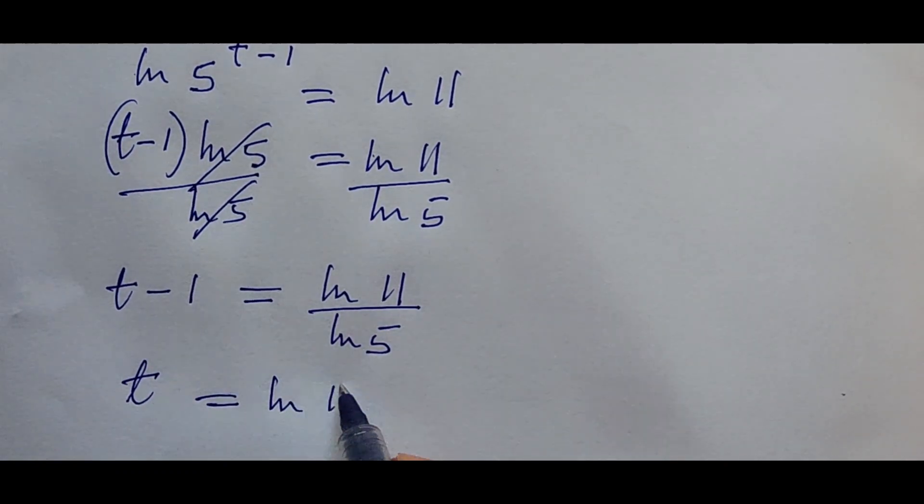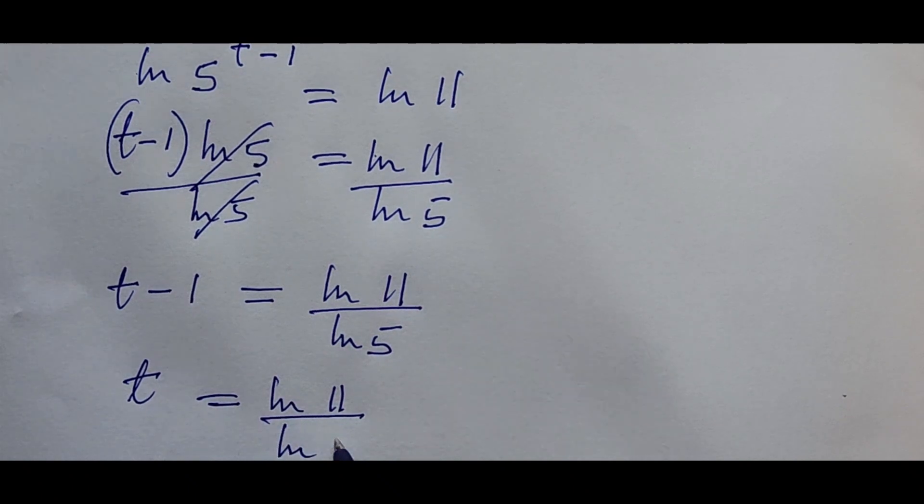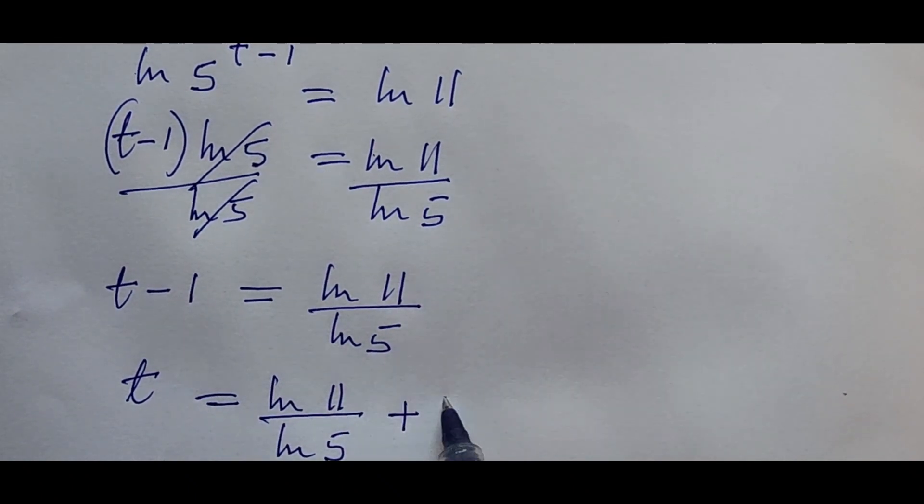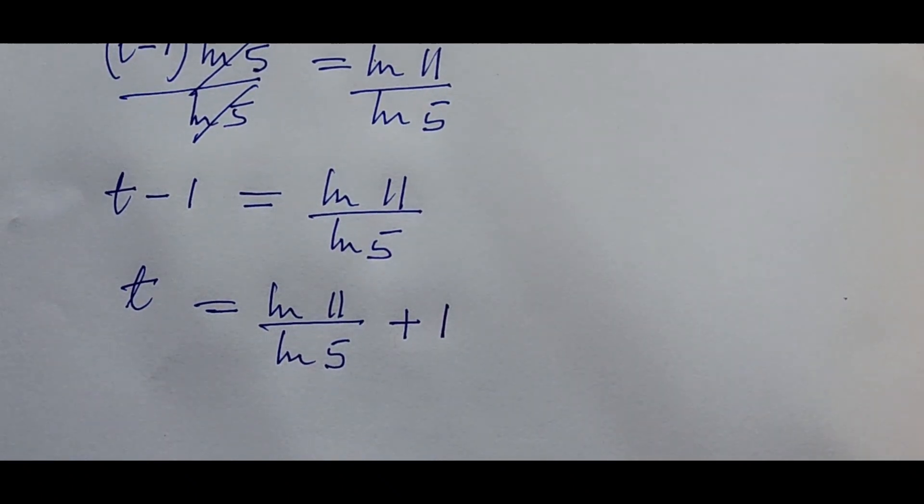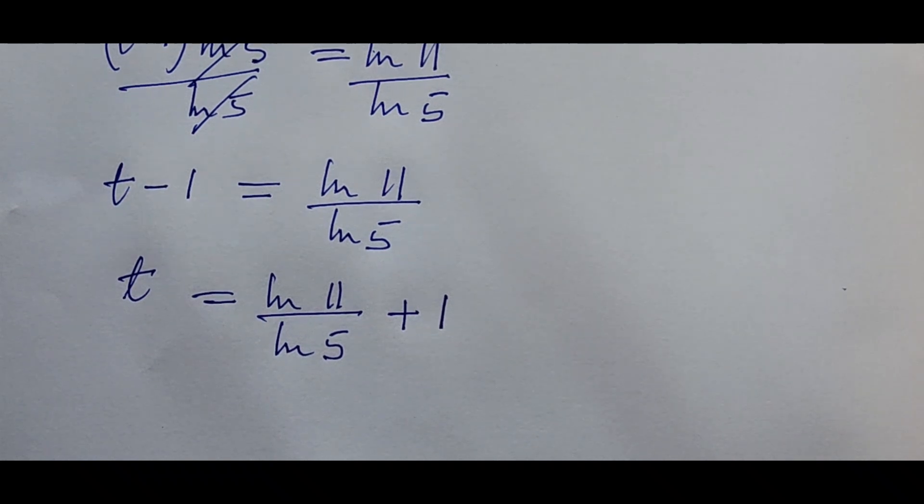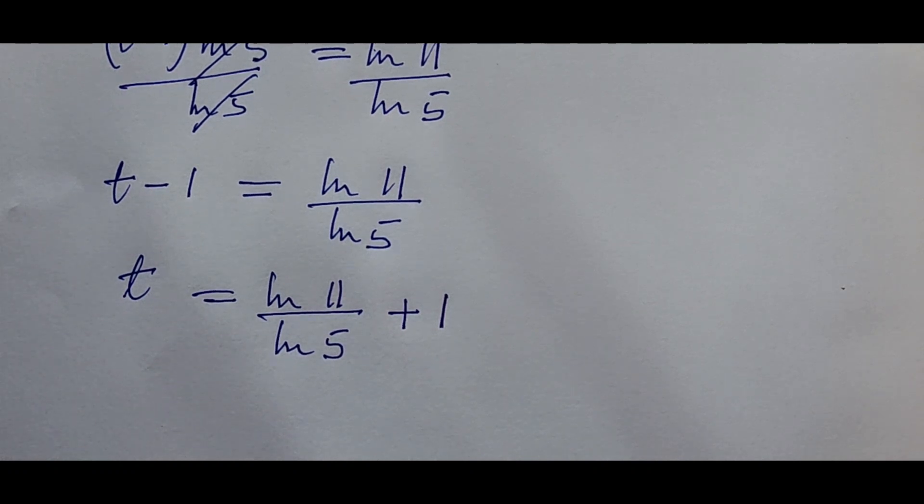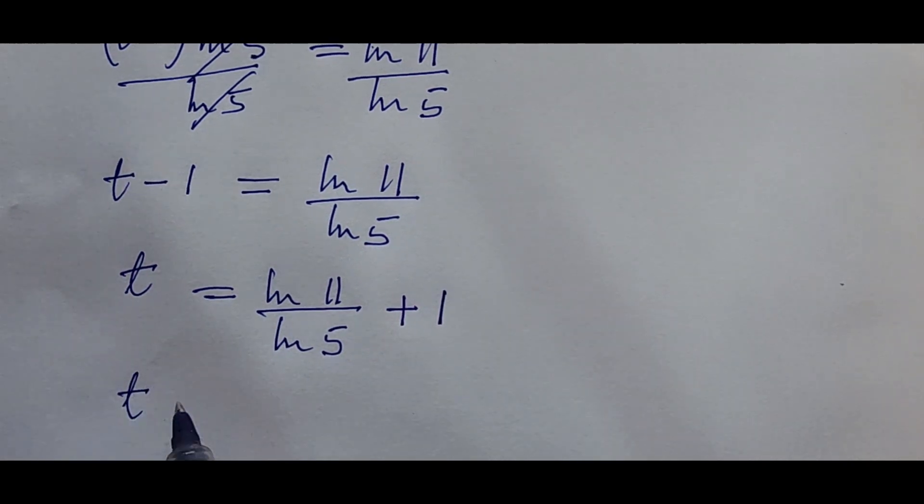This is going to give us t is equal to the ln of 11 all over the ln of 5 plus 1. We can get the value, the numerical value of ln of 11 and ln of 5, but we cannot simplify ln of 11 and that of 5 beyond this. So we can get the value numerically from our calculator.